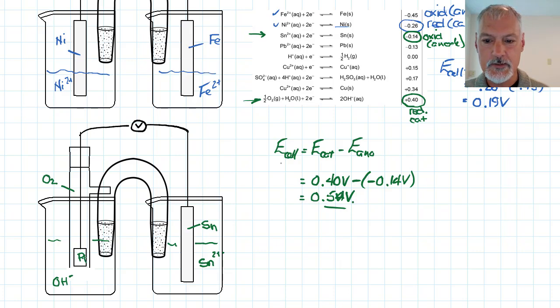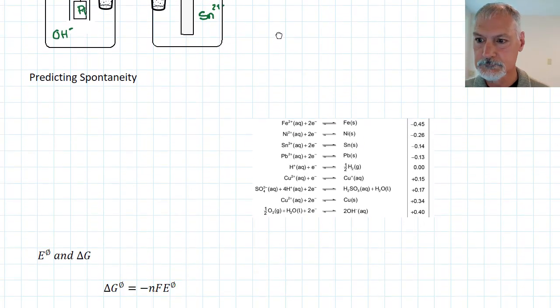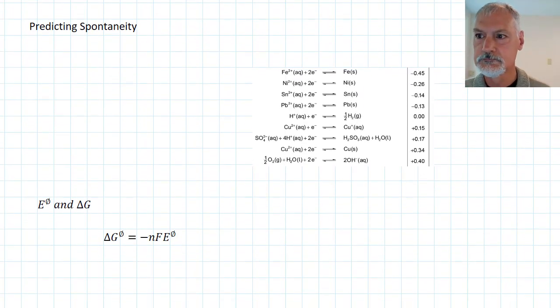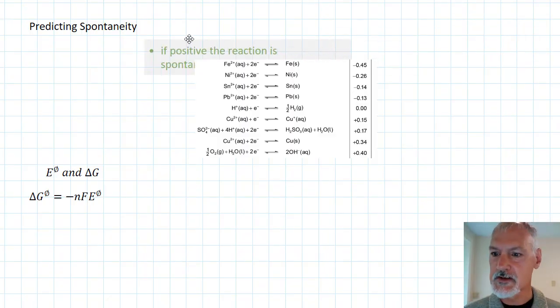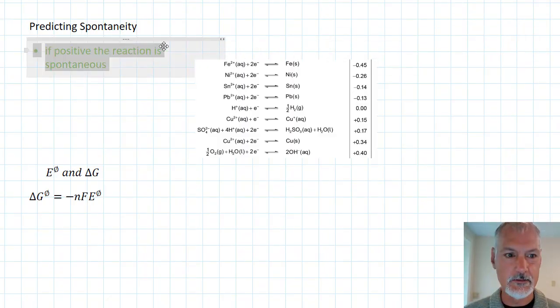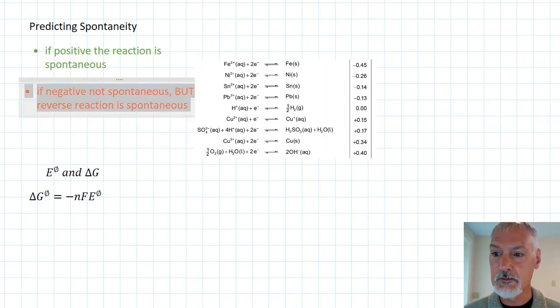Now there's a connection between the energy of the cell and the spontaneity of a reaction. So generally speaking, if the energy of our cell turns out to be a positive value, we will have a spontaneous reaction, as in the examples above. If, however, you get a negative value, then our reaction is not spontaneous, but the reverse reaction would be. Let's take a look at an example.